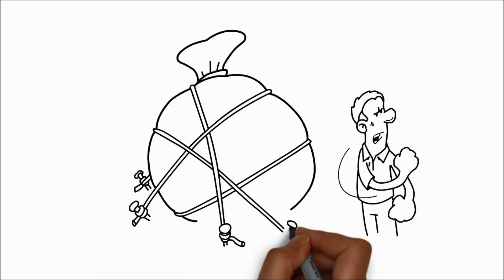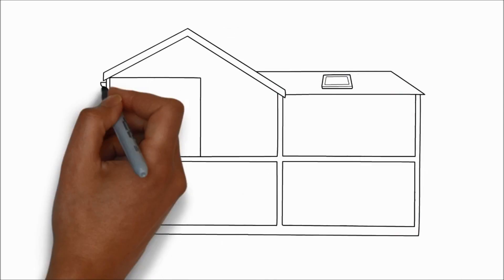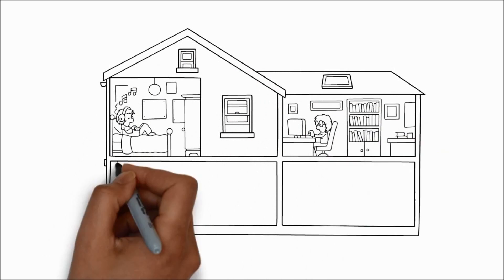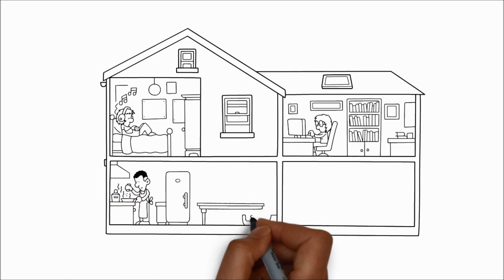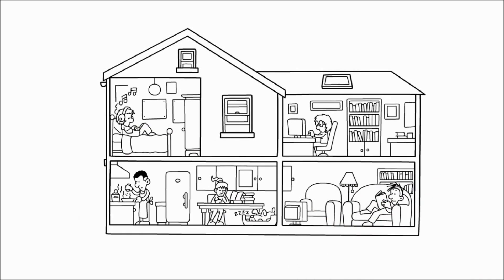There are options. Some people secure a bridge loan that's paid back when their home sells. Others negotiate to sell, but then rent their current home back from the buyer for a period of time. Some people move in with family members or rent until they find their next house.